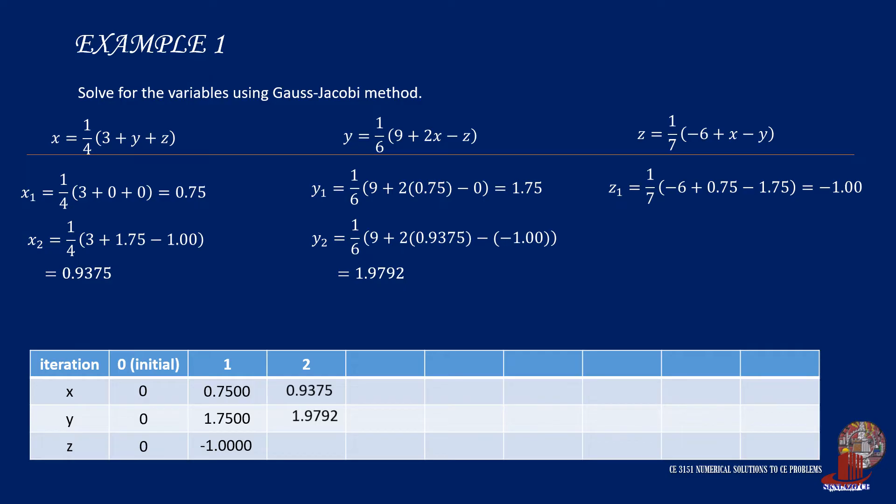which results to 1.9792. Z sub 2 is computed as one over 7 of negative 6 plus 0.9375 minus 1.9792, that is the new y value, and we get negative 1.0060.